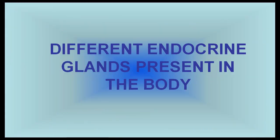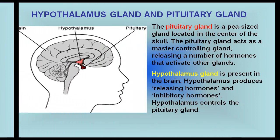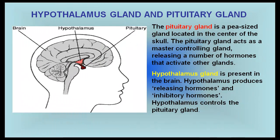We are now going to study the different endocrine glands present in the body. The pituitary gland is a pea-sized gland located in the center of the skull. It acts as a master controlling gland, releasing a number of hormones that activate other glands. The hypothalamus gland is also present in the brain.